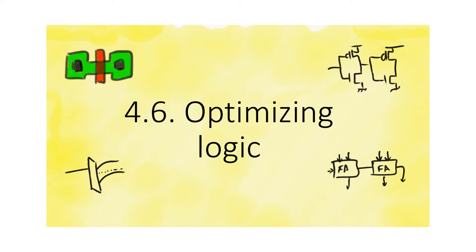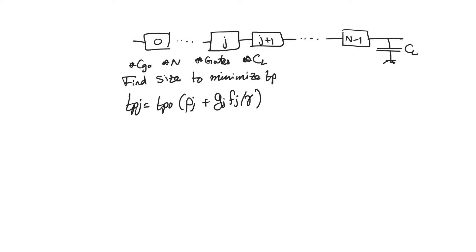We bring everything from the previous videos together to optimize delay in a logic chain. The givens are that we have a chain of logic gates where each gate is different. We know the number of gates, the types of gates, the size of the first gate, and the output capacitance we have to drive. But we don't know the sizes of all the gates other than the first one. The objective is to find the sizes that minimize the total delay tp — not tpj.